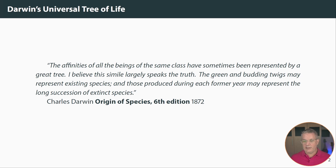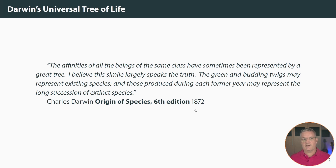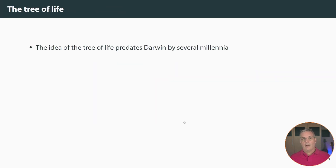The other thing Darwin notes is that the twigs — the leaves as we call them now — may represent existing species, and those produced by each former year may represent the long succession of extinct species. That is also how we represent phylogenetic trees today. The leaves of the trees typically represent our observations of species, sequences, or genes, and the branching patterns within the tree represent earlier evolutionary history. Of course, the idea of a tree of life is not Darwin's — it's covered in multitudes of religions and origin stories, so it's quite ancient.